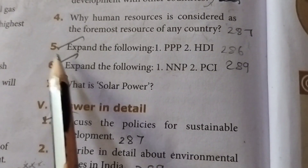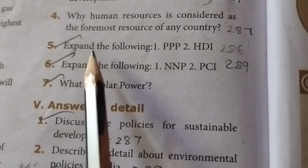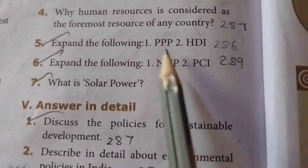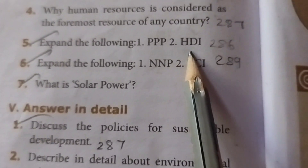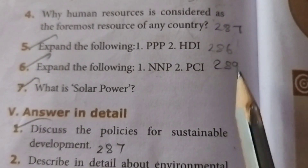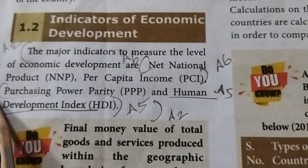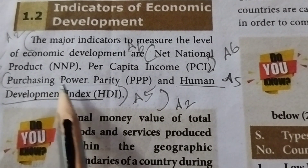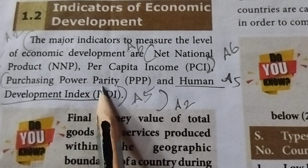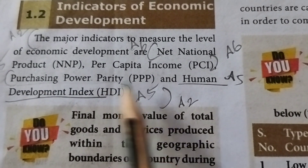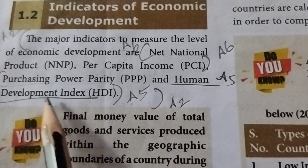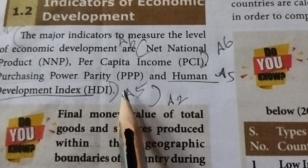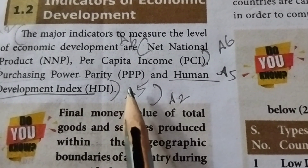Fifth question: expand the following — PPP and HDI. (Page number 286.) PPP stands for Purchasing Power Parity. HDI stands for Human Development Index.